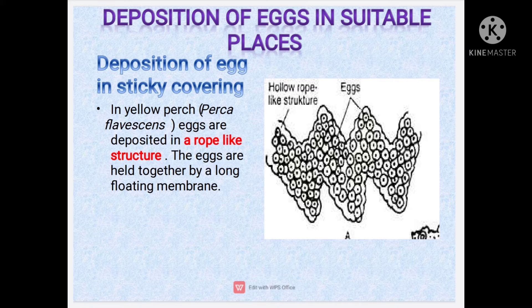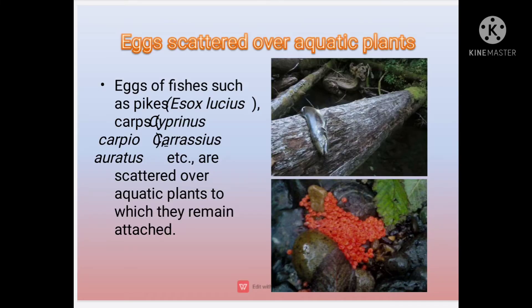The first subtype is deposition of eggs in a sticky covering. This type of behavior is shown in the yellow perch. In this method the eggs are deposited in rope-like structures, held together by a long floating membrane.